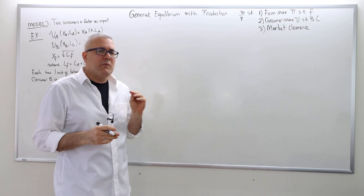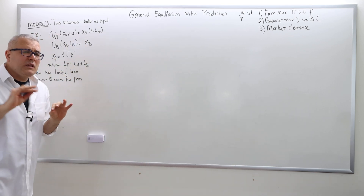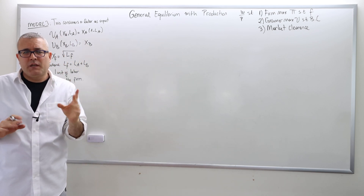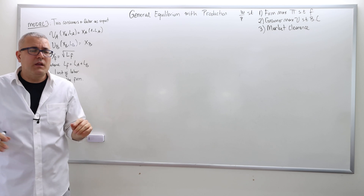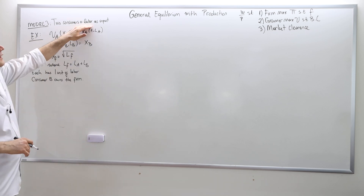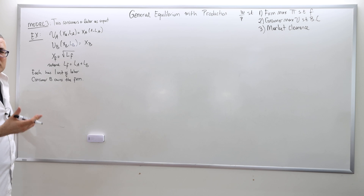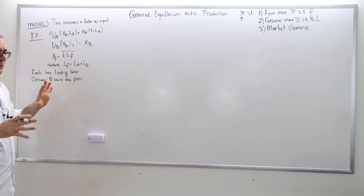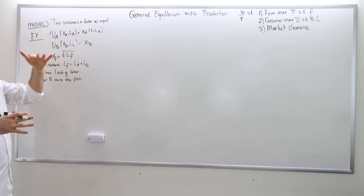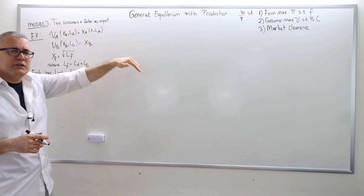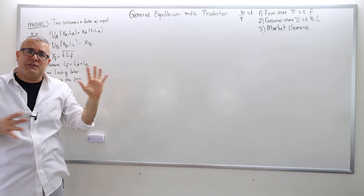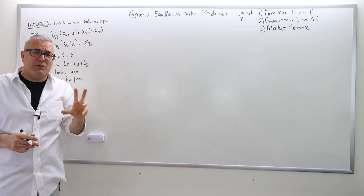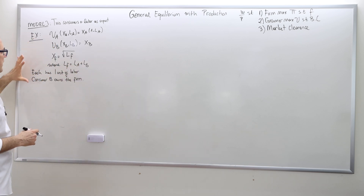Now we are in Model 3. The only difference between Model 2 and Model 3 is that now we have two consumers. That's it. Everything else is the same. The labor is still an input, and leisure — the remaining of labor — gets into the utility function. Because of the similarity, I'm not going to talk about model-specific assumptions. I'm going to talk directly about the numerical example-specific assumptions.